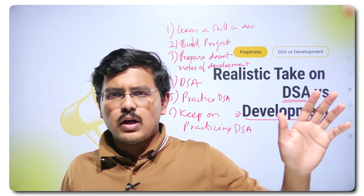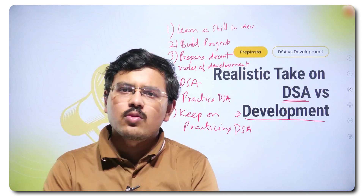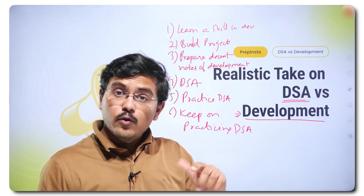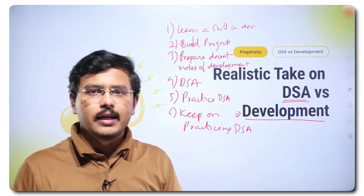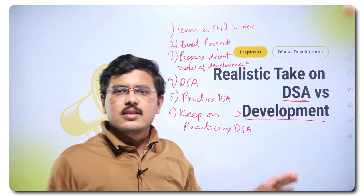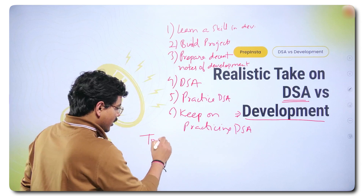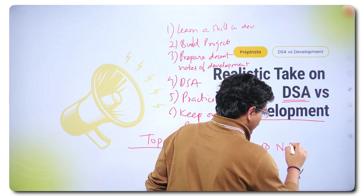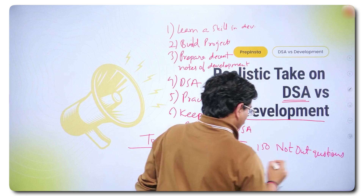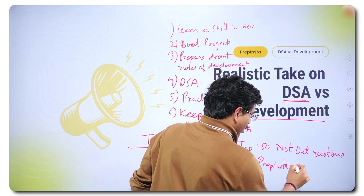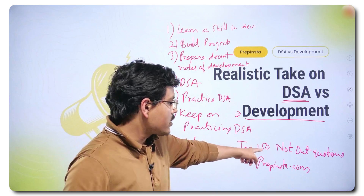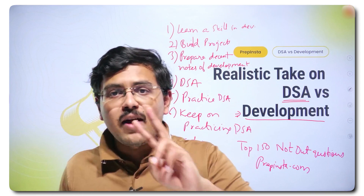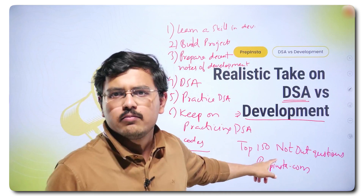If you apply in 100 companies and you're targeting them, 70 are asking DSA — it makes no sense to leave DSA and go only for development. There are some companies, very rare, which give you a project assignment, do not ask DSA, and take you in on the basis of that. But the majority hire through DSA. So practice DSA. Two resources, both free: Top 100 codes on PrepInsta — free. Top 150 Not-Out questions, free of cost on PrepInsta.com. A person who has practiced these 150 Not-Out questions well and knows the patterns applied here can crack MAANG, FAANG, product-based, service-based — any company in this world.